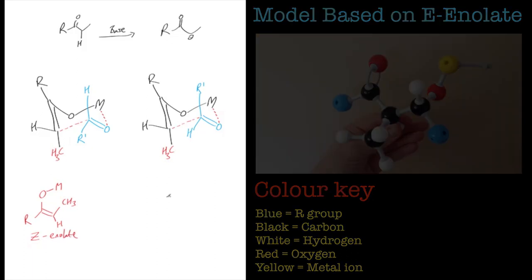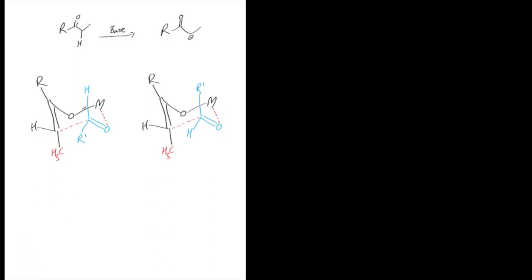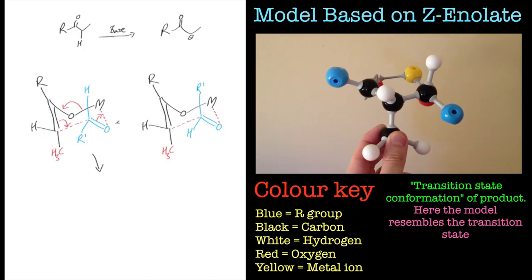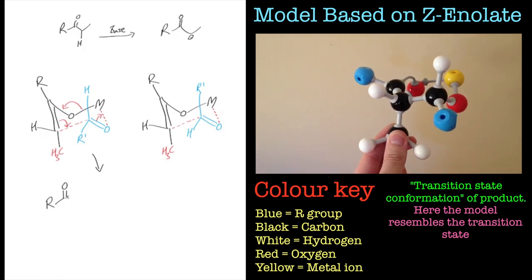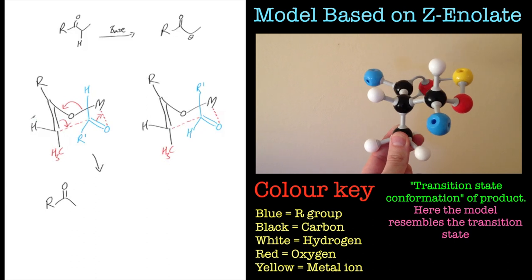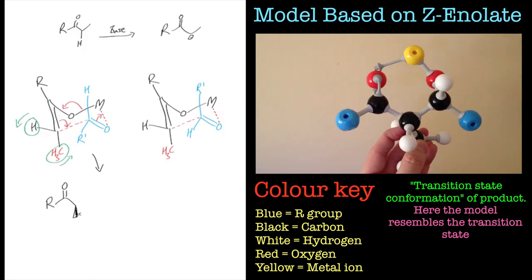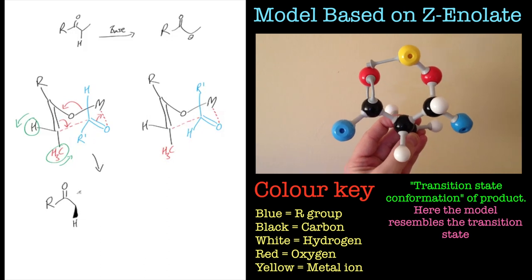We're just going to go over the Z enolate now and you can see how that will lead to a different product. So rearranging again, move all the electrons around, just do the reaction mechanism like that. And then the important part is stick to that six-membered ring and rotate some of the equatorial and axial protons and alkyl groups.